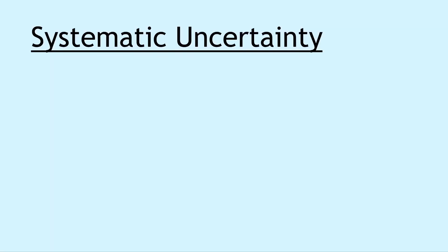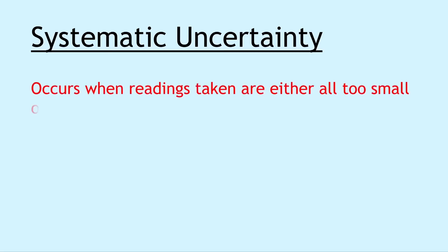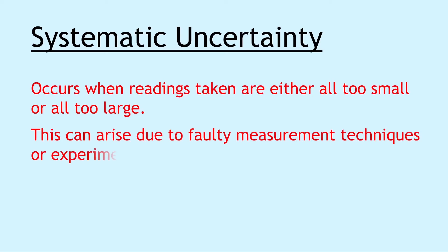Lastly we have systematic uncertainty, and this occurs when readings taken are either all too small or all too large. This can arise due to faulty measurement techniques or experimental design. Remember systematic uncertainty can be shown on a graph where you've got a straight line where it should be through the origin, but it's actually been offset from the origin.